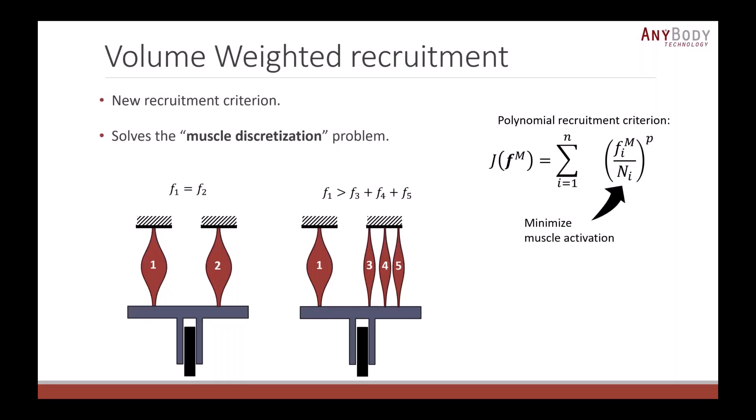Another thing related to this is volume-weighted recruitment, a new recruitment criterion in AnyBody. It solves the muscle discretization problem. The muscle discretization problem is, if you imagine a one-dimensional problem where two muscles share a load, if these two muscles have the same strength, then the polynomial recruitment criterion would predict that these two forces have the same activation, they produce the same force. Let's imagine that you now take one of those muscles and split it, discretize it into three smaller muscles. In total, they have the same strength as the bigger one they replaced.